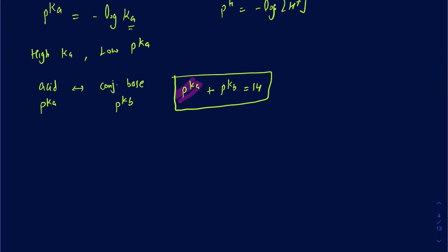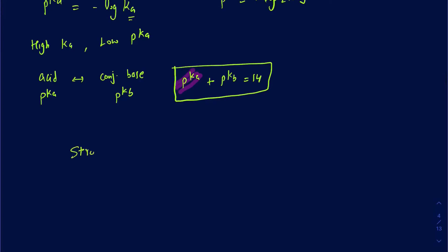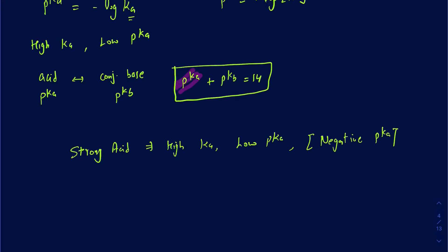Keep in mind that strong acids have high Ka and low pKa. Among the six strong acids — like HCl, HBr, and others — you'll even get negative pKa values. The pKa value typically ranges from about negative 20 all the way to 50. If you're on the negative side, you're a very strong acid; if you're around 50, you're a very weak acid.